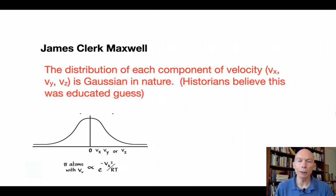James Clerk Maxwell then took it to a higher level. He said instead of having all of the gas molecules at the same velocity that they have a distribution. Specifically, he said that the distribution of each component of velocity in the X, Y, and Z directions is Gaussian in nature. Historians believe that this was an educated guess that he was able to prove later. I won't get into that history here now, but it's quite interesting. So, here's the famous Gaussian distribution around X, Y, and Z components of velocity.